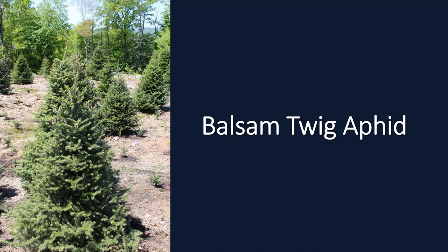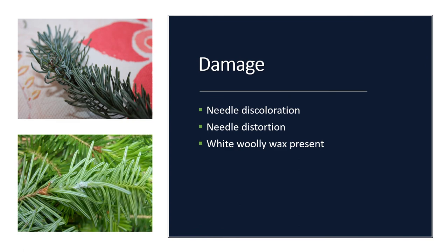The balsam twig aphid causes needle discoloration and needle distortion when populations are large enough. This sap-sucking pest prefers trees like balsam fir, Fraser fir, and other true firs. These aphids feed on the sap of developing buds and new needles in early spring, reducing the plant's ability to produce healthy needles and resulting in needle curl and distortion. There may also be a white woolly wax present, which is an indicator of this pest. The balsam twig aphids are tiny, soft-bodied insects with piercing, sucking mouth parts. Most stages are pale, bluish-green, and some may have powdery wax strands adhering to their body.